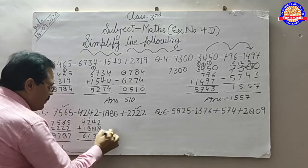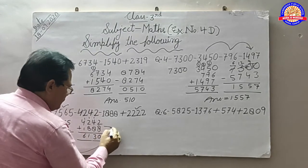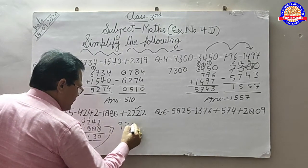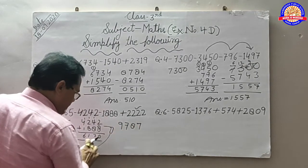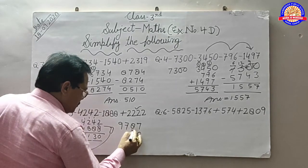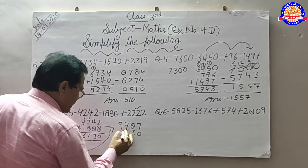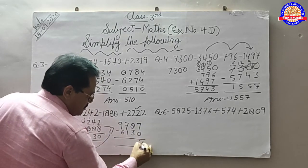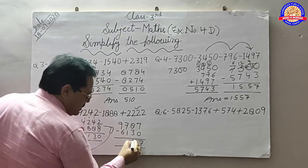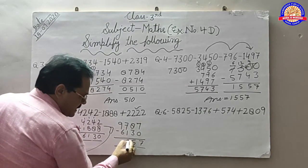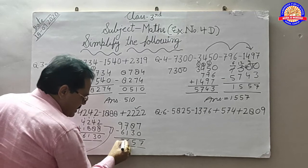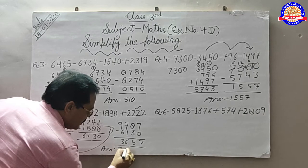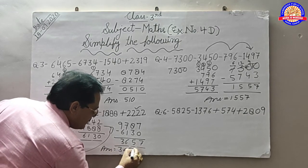अब इस नम्बर को ऊपर ले जाएं: 9, 7, 8, 7. यह दो नम्बर हैं, वो नीचे लिखेंगे: 0, 3, 1, 6. अब यह minus: 7 minus 0 equals 7. 8 minus 3 equals 5. 7 minus 1 equals 6. 9 minus 3 equals — answer equal: 3, 6, 5, 7.